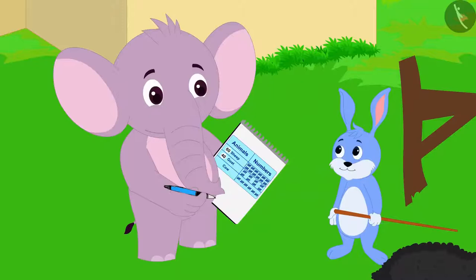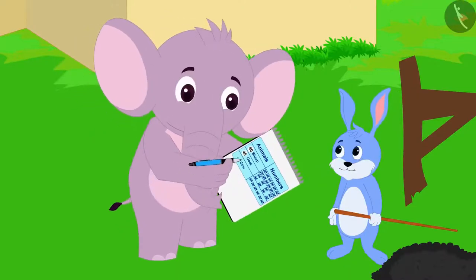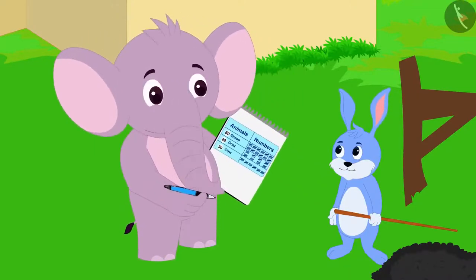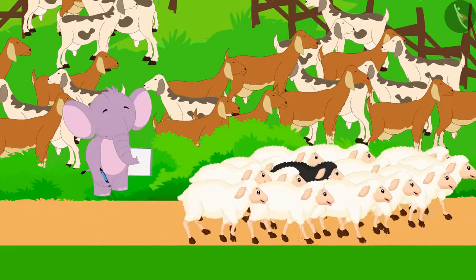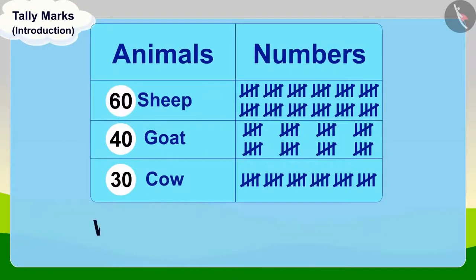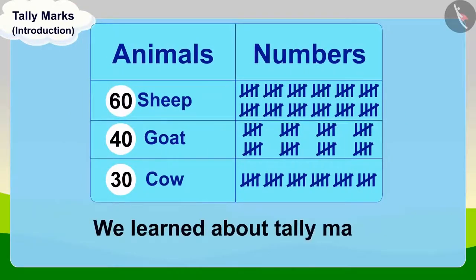Appu too found out the total number of cows. He thanked Bunny for telling him about tally marks and gave him his sheep to graze. Children, in this lesson we learned about tally marks. In the next video, we will learn more about it through some interesting examples.